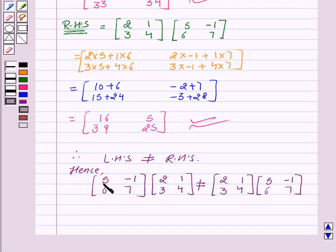Hence, matrix [5, -1; 6, 7] multiplied by matrix [2, 1; 3, 4] is not equal to matrix [2, 1; 3, 4] multiplied by [5, -1; 6, 7]. This also shows that the multiplication of matrices is not commutative.